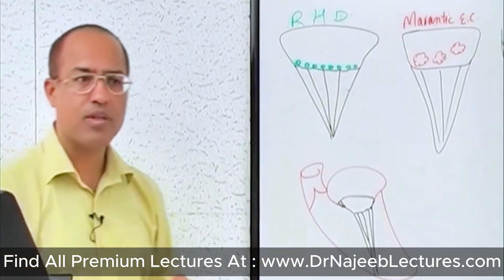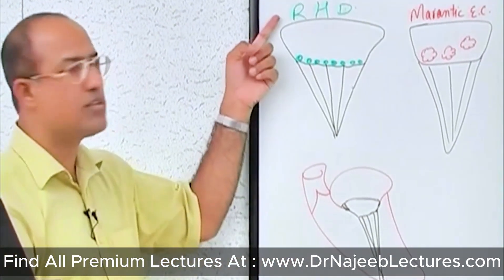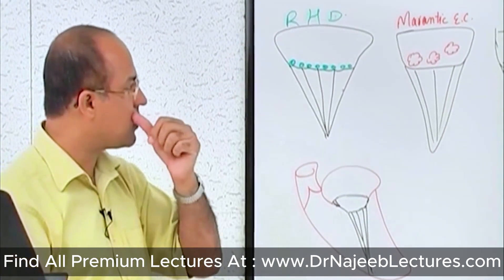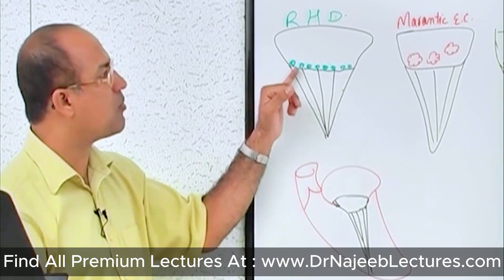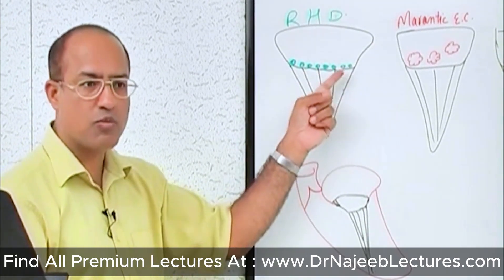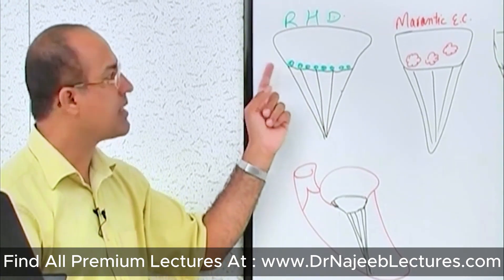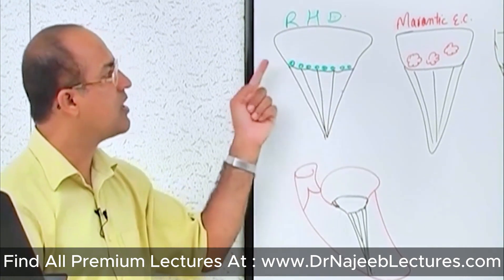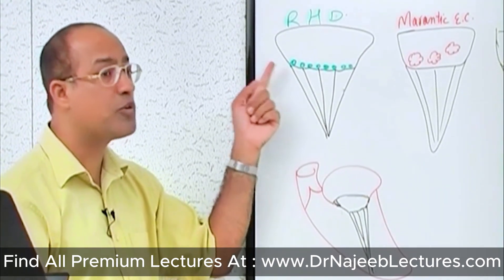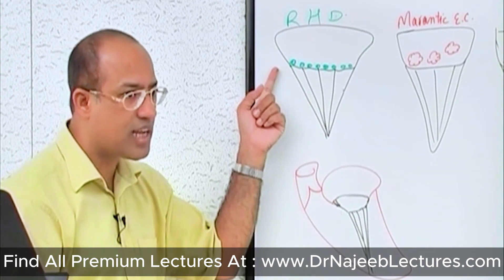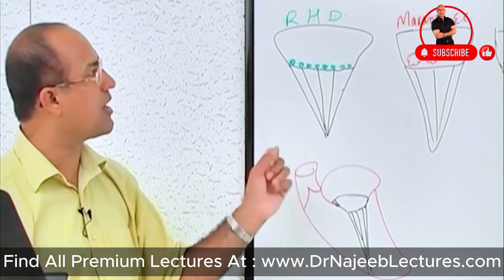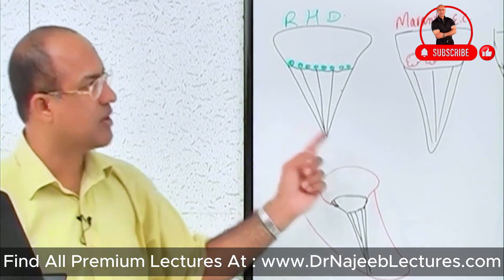Here is a mitral valve which I have put over there. In rheumatic heart disease, there is immune-mediated damage to the mitral valves and multiple small vegetations are formed along the line of closure. These are small but multiple vegetations. These are sterile vegetations and they consist of just platelets and fibrin. A very important point — they do not have any microorganisms. They are sterile, they don't detach, and they don't embolize.